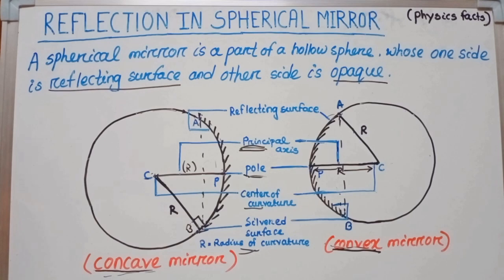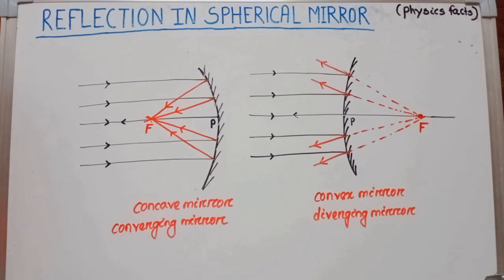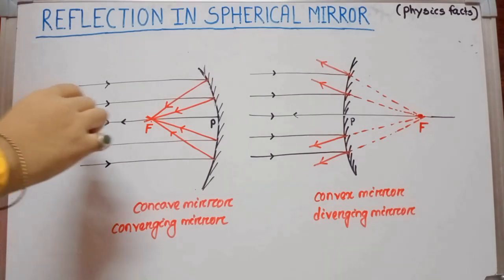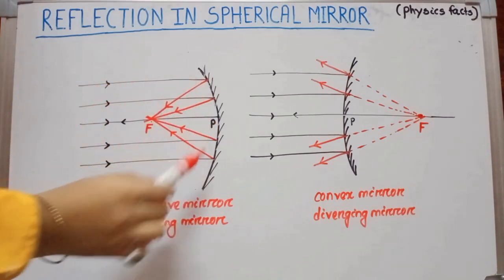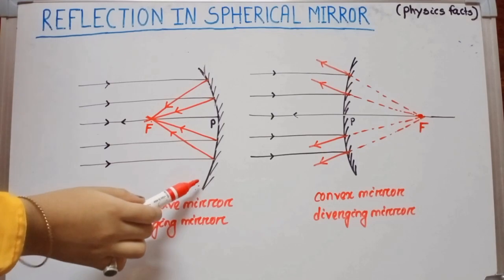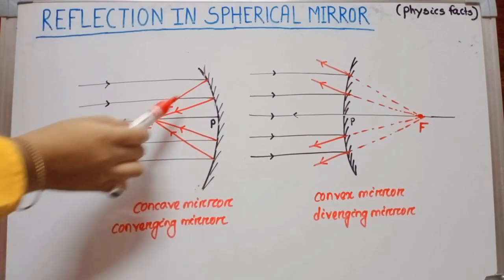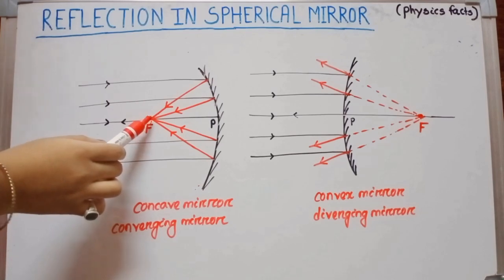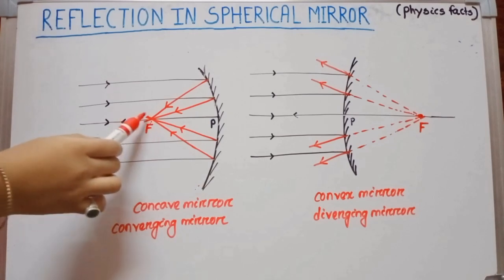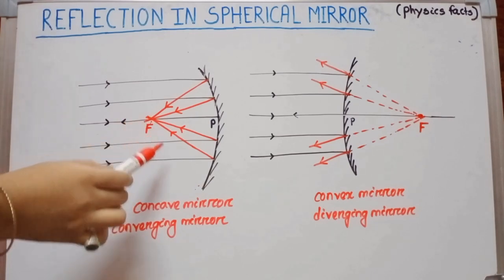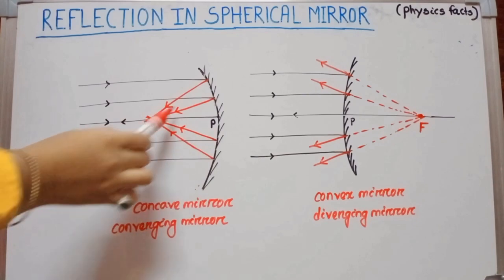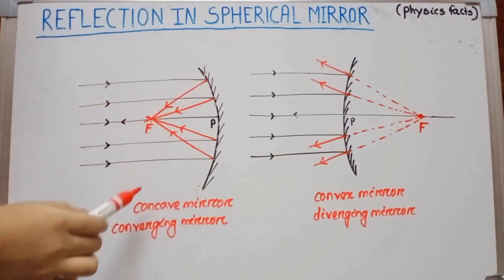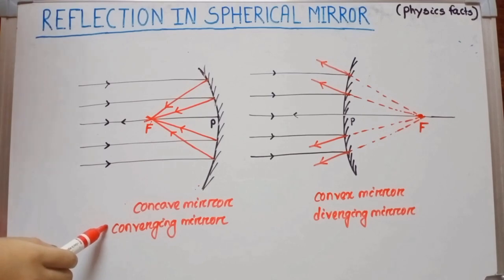Now we go to focus. A beam of light parallel to the principal axis falls on a concave mirror. After reflection, the reflected rays converge and meet at a point — that point is called the focus. In case of a concave mirror, the reflected rays converge, so a concave mirror is also known as a converging mirror.